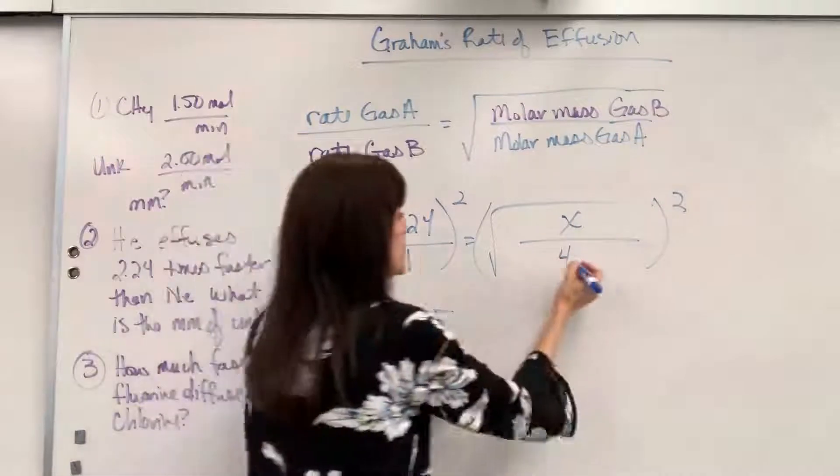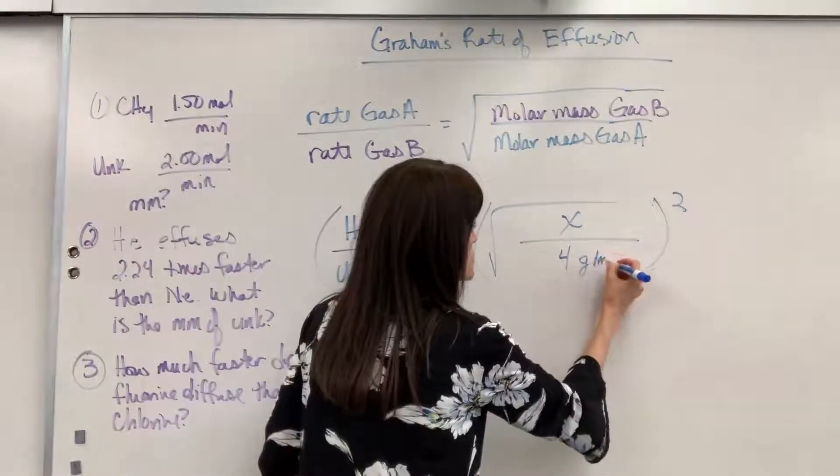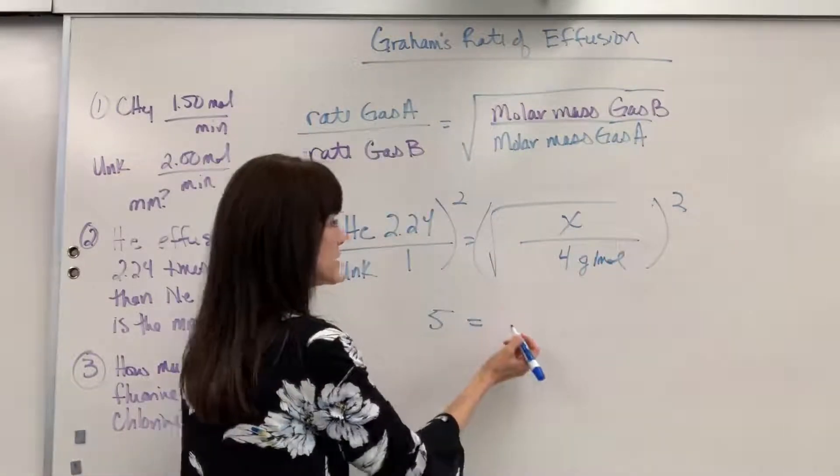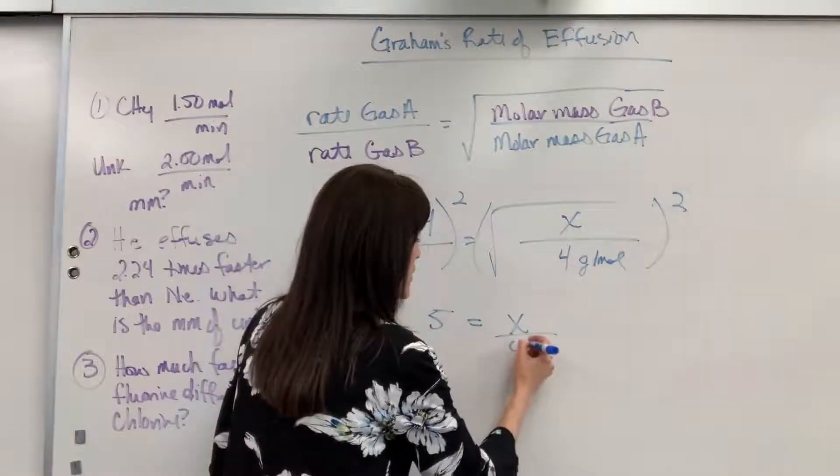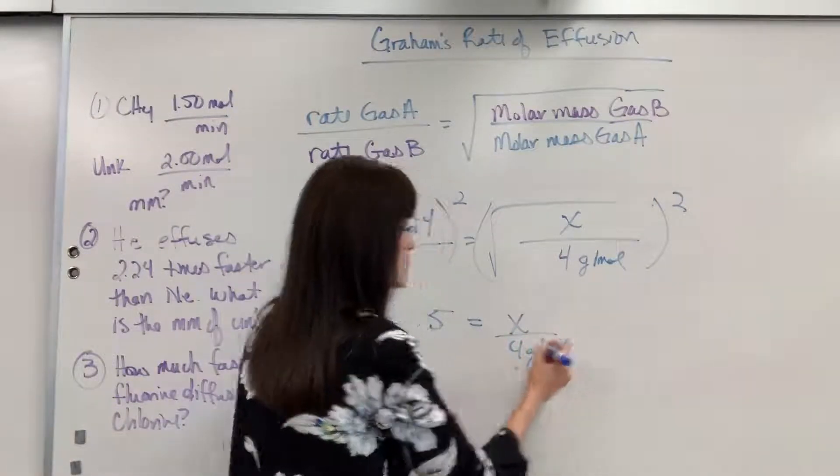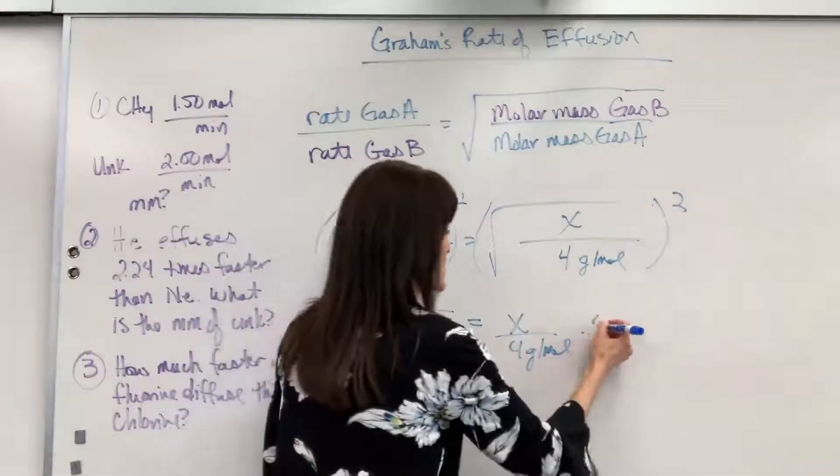The unit here is grams per mole. This is going to equal x divided by 4 grams per mole. So, let's go ahead and multiply both sides by 4.